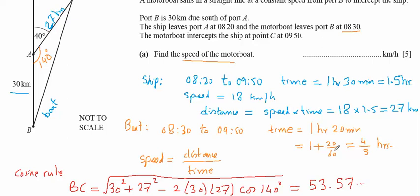Since we need the accuracy to 3 significant figures, so better to keep our values to 4 or more decimals. So this is more than 4 significant figures. So this is in kilometers. So it means this length is 53.57 kilometers.